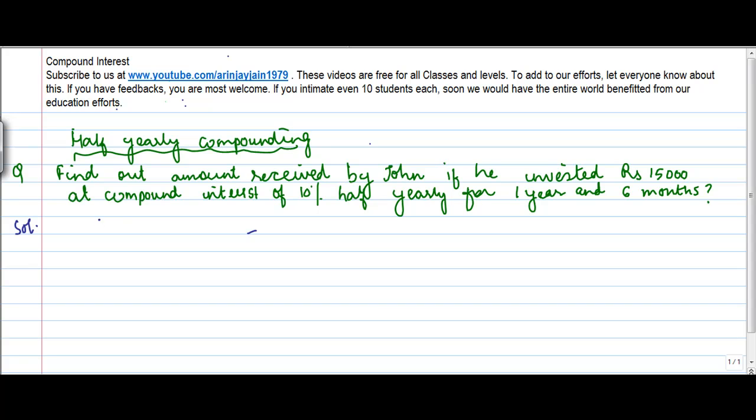Now we know that the amount at the end of n years is equal to the principle times 1 plus r upon 100 to the power of n.